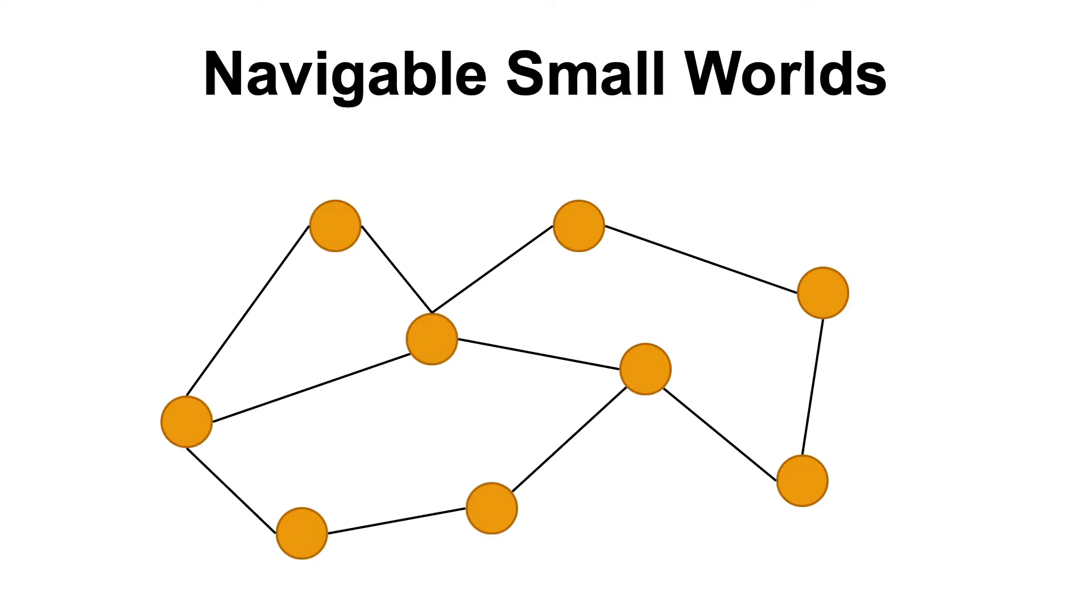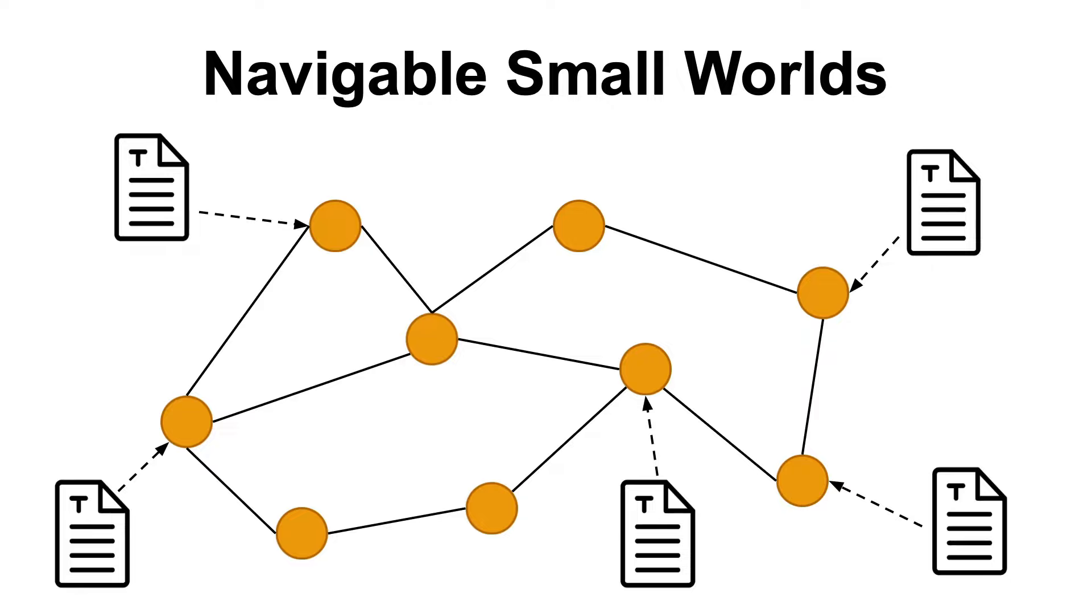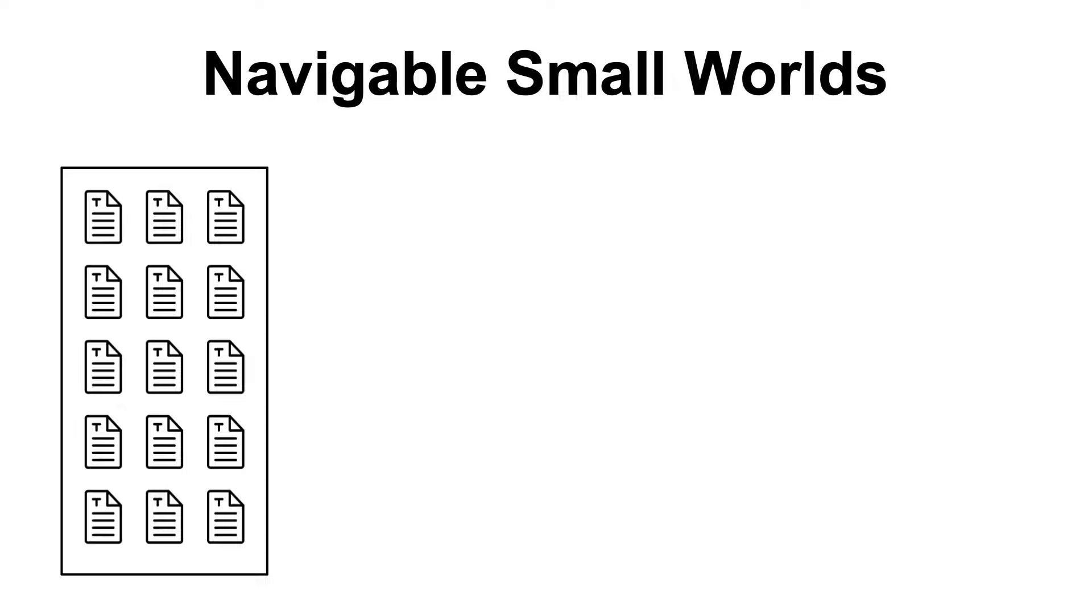One way to speed up the search process is to use a data structure called a navigable small world, which is a graph where each node represents a vector. The way we create this graph is as follows. Imagine we have a database of documents, and each document is represented by a vector.